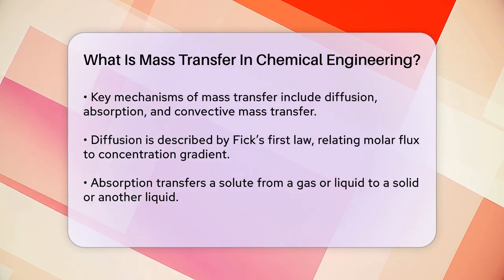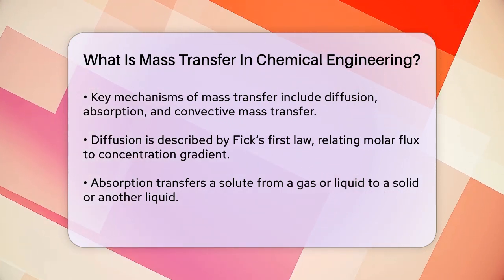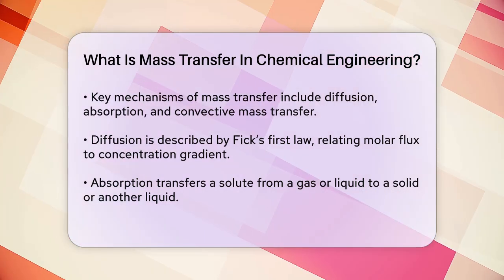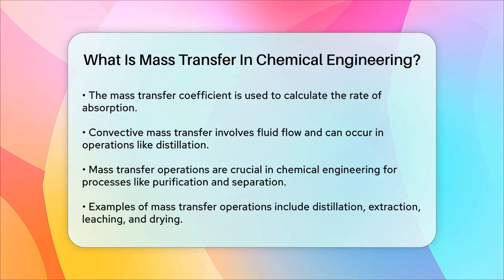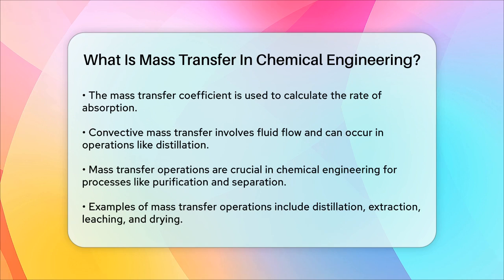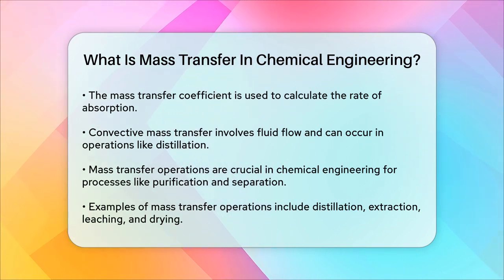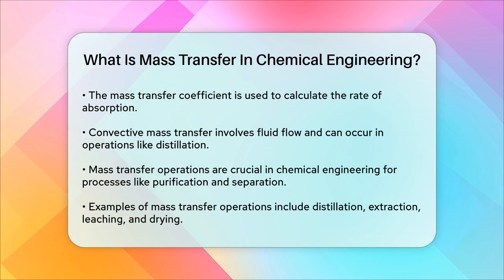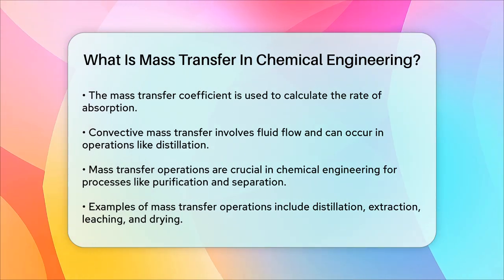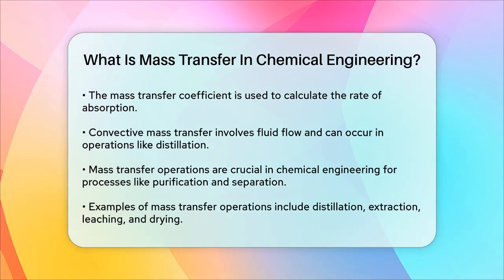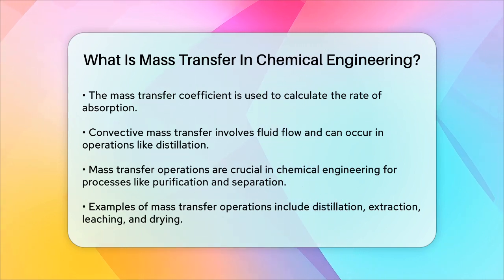Mass transfer operations are vital in chemical engineering because they are used in almost every chemical process. Whether it's purifying raw materials or separating products from byproducts, mass transfer is essential. Examples of mass transfer operations include distillation, extraction, leaching, and drying. These operations can be quite complex and often involve chemical reactions, making the understanding and modeling of mass transfer crucial for designing and optimizing these processes.